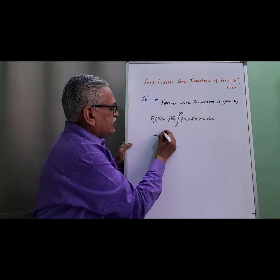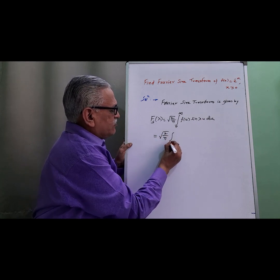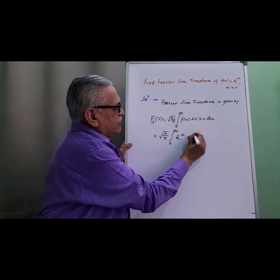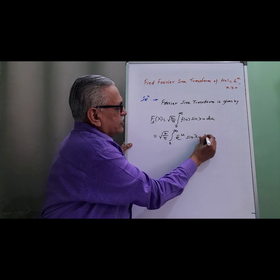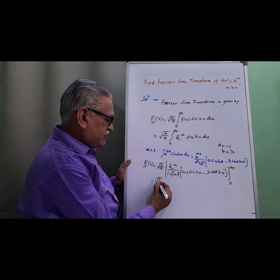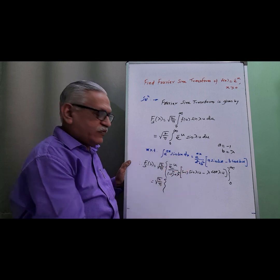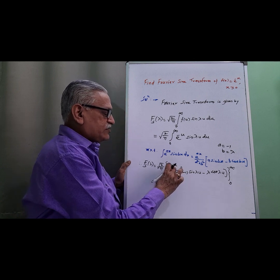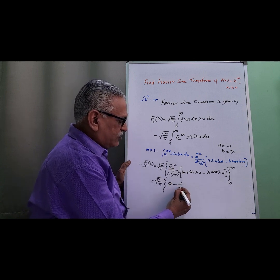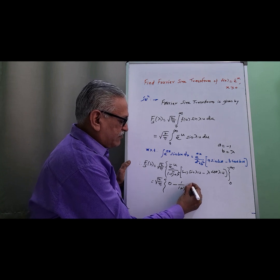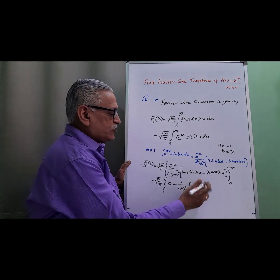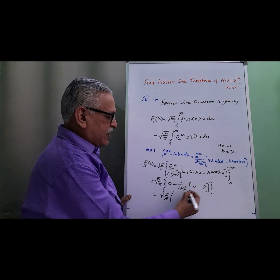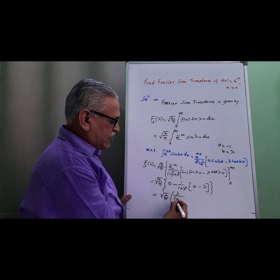Substituting the value, we get √(2/π) times the integration from 0 to infinity of e^(-u) multiplied by sin(λu) du. We get √(2/π): the upper limit term e^(-∞) is 0, so that term becomes 0. For the lower limit it becomes e^0, and e^0 is 1, giving 1/(1 + λ²), multiplied by sin(0) = 0 and cos(0) = 1. Therefore we get the value as √(2/π) · λ/(1 + λ²). Thank you for watching.